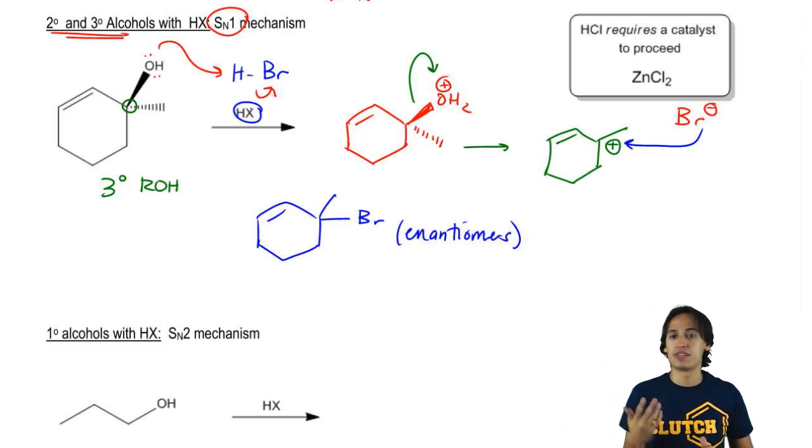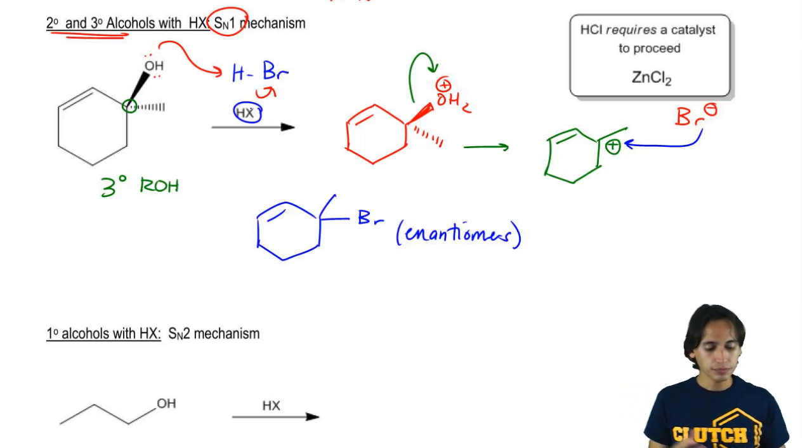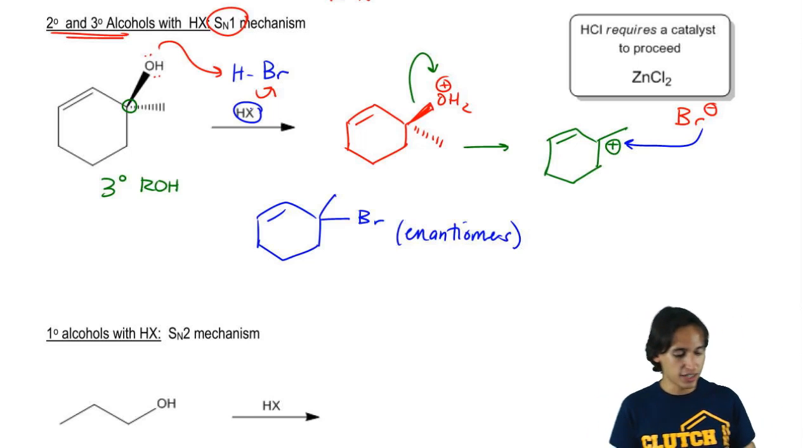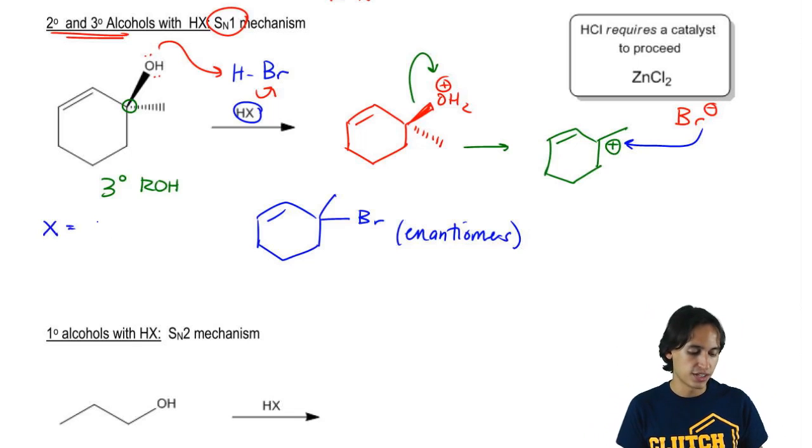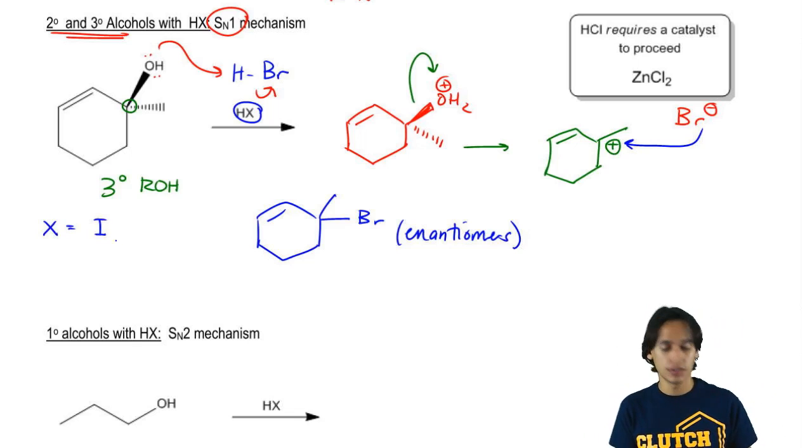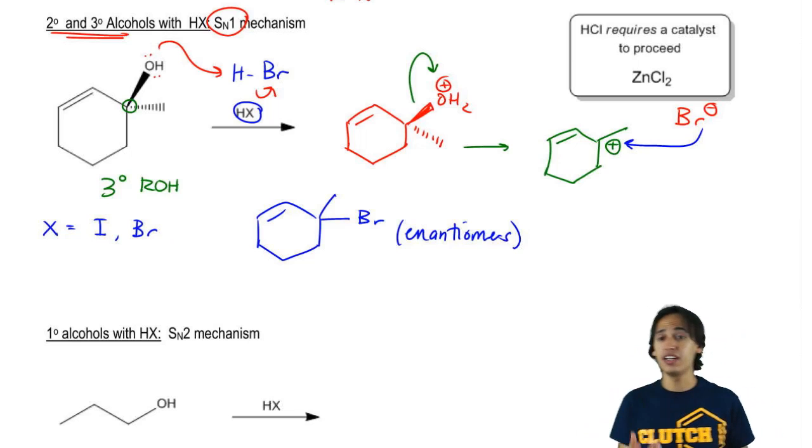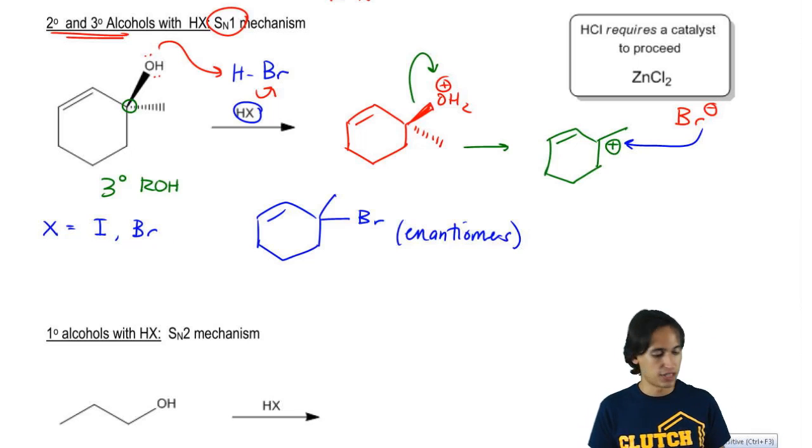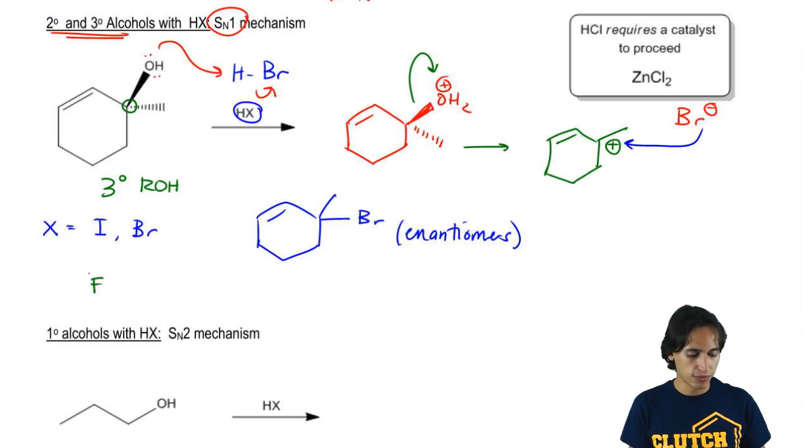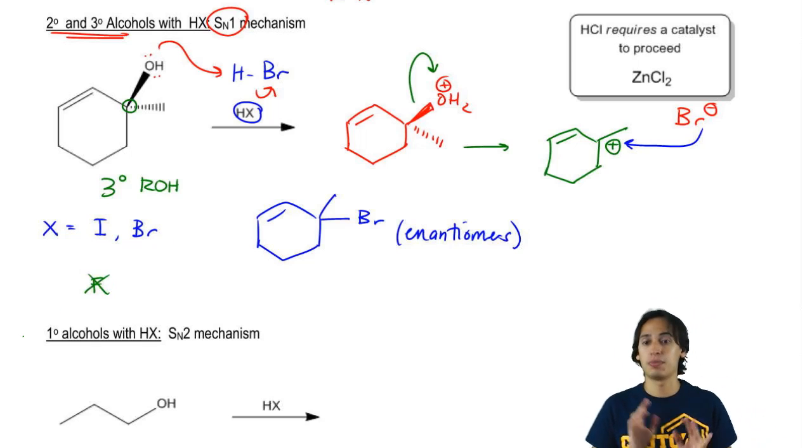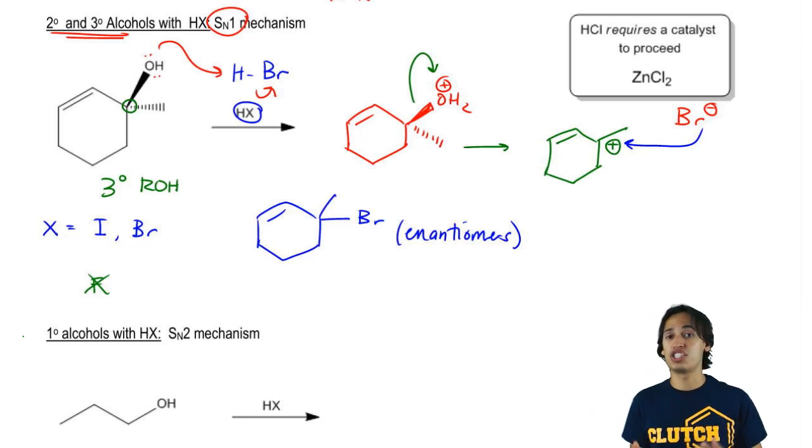Now there is one more note that I have to say which is that the X in HX can equal two things. It can either equal iodine or it can equal bromine. What about chlorine and fluorine? Just so you know, fluorine is too weak to react. So I'm just going to put F doesn't happen. So it can't be F. HF is not a strong enough acid to make this happen.